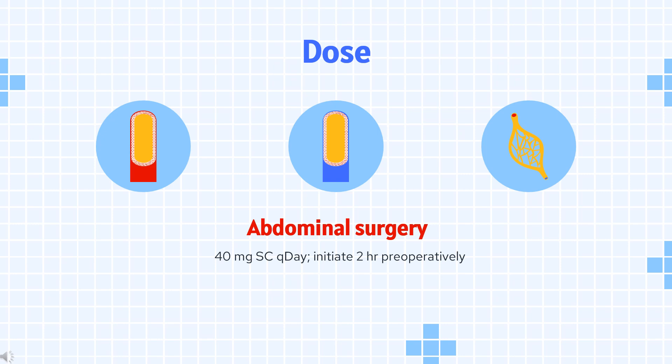Dosing Considerations: Abdominal surgery – duration of administration is 7–10 days, up to 12 days as administered in clinical trials, or until risk of DVT has diminished. Knee or hip replacement surgery – duration of administration is 7–10 days, up to 14 days as administered in clinical trials, or until risk of DVT has diminished.